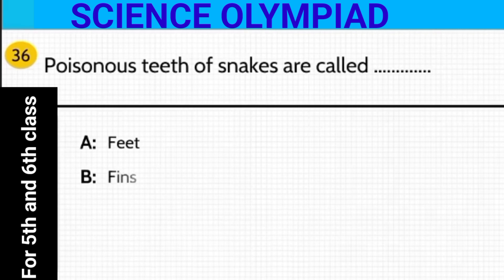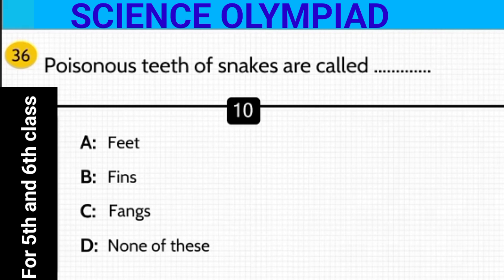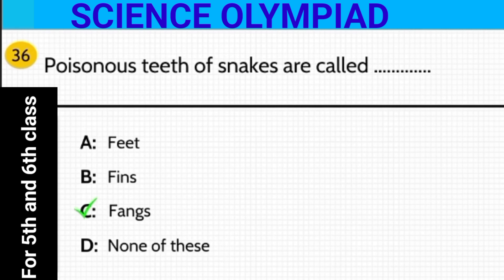Poisonous teeth of snakes are called blank. Options: feet, fins, fangs, or none of these? The answer is fangs — poisonous teeth of snakes are called fangs.